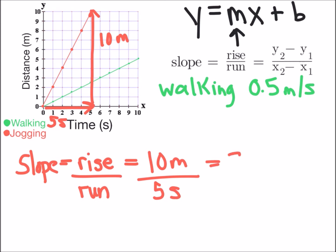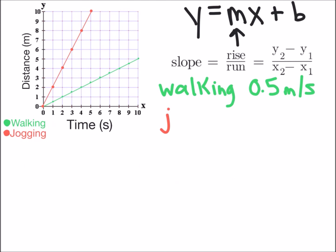And we can do that calculation to get 2 meters per second which is going to be the speed for the person jogging.